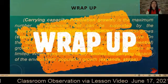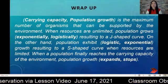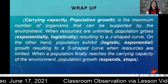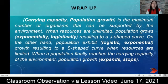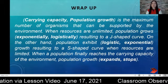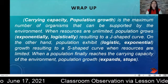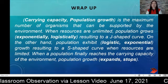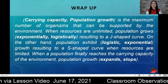This is a summary. Pick the right word fitting each description from the words in parentheses. Carrying capacity is the maximum number of organisms that can be supported by the environment. When resources are unlimited, population grows exponentially, resulting in a J-shaped curve. On the other hand, population exhibits logistic growth resulting in an S-shaped curve when resources are limited. When a population reaches the carrying capacity of the environment, population growth stops.